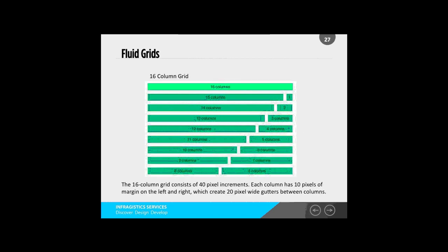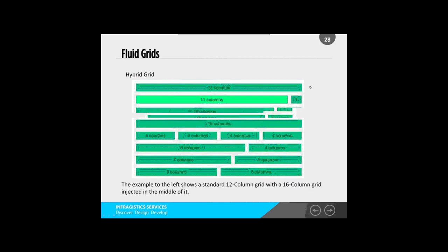The 16-column grid consists of 40-pixel increments, with a 10-pixel margin on the left and right, which creates a 20-pixel-wide gutter between the columns. There's also something called a hybrid grid, where you use both the 12-column and the 16-column grid together to create a layout. You don't have to exclusively use one — the two can be spliced together to create dynamic layouts that suit your needs.